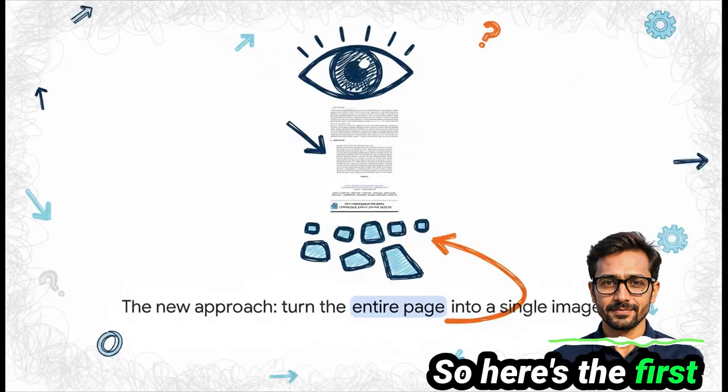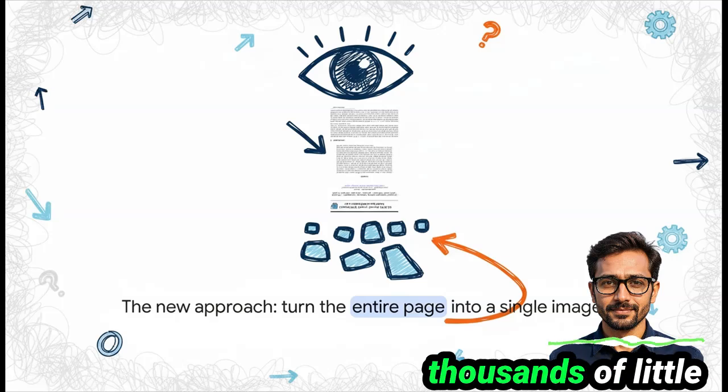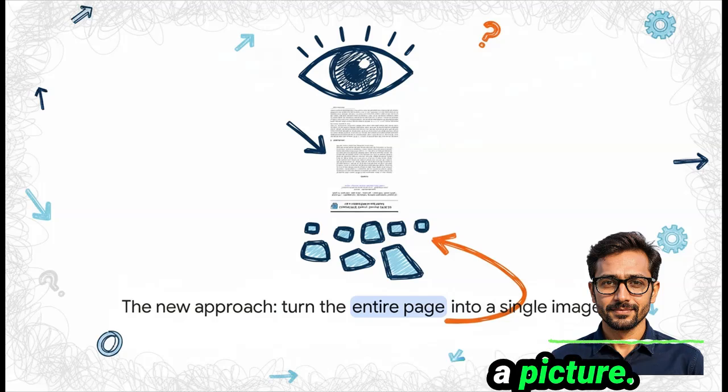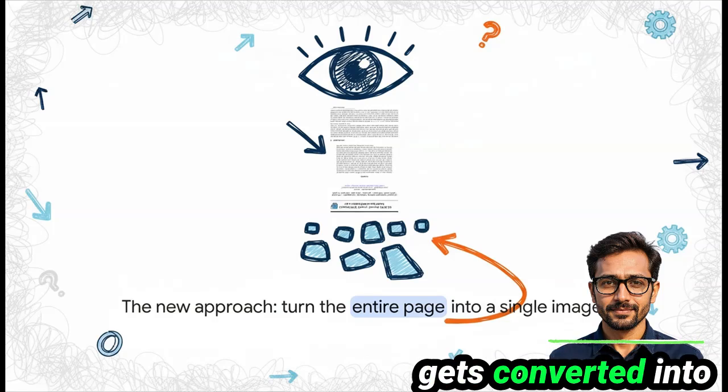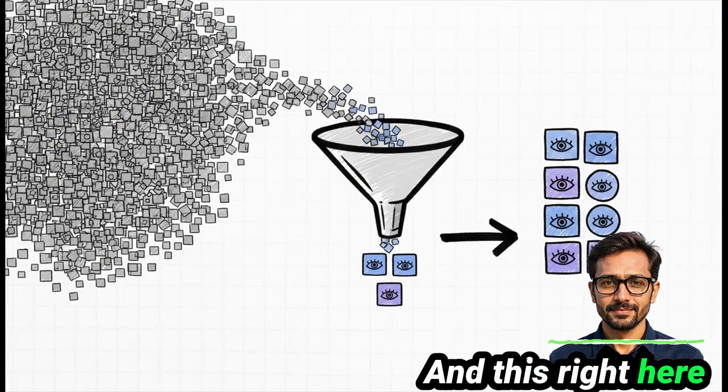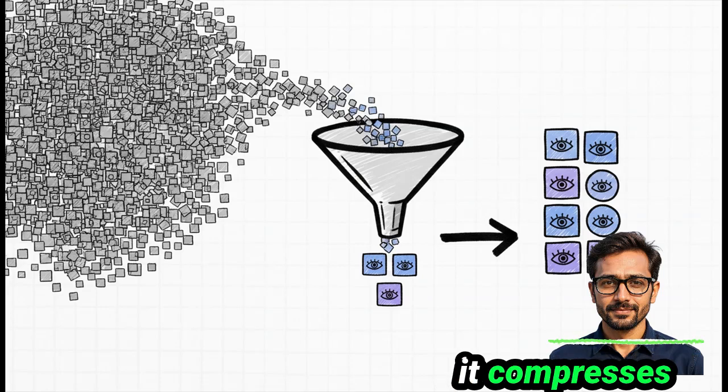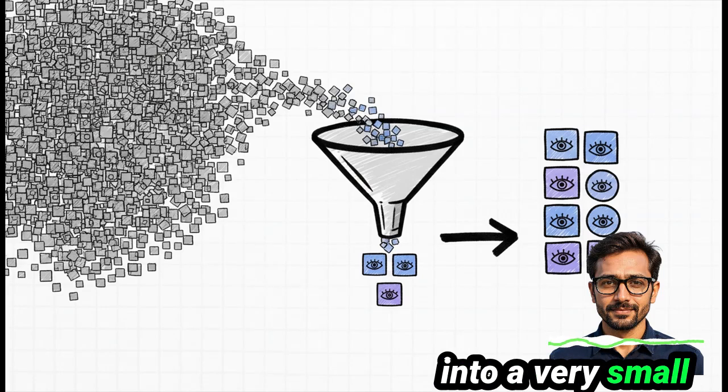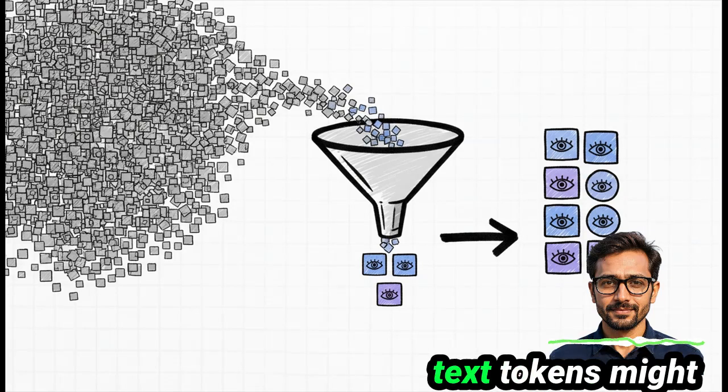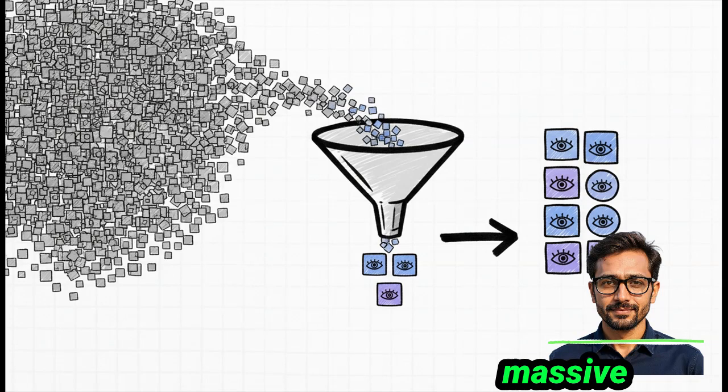So here's the first big move from DeepSeek OCR. Instead of feeding the AI all those thousands of little text tokens, it does something beautifully simple. It just takes a picture. The whole page gets converted into one single high-resolution image. And this right here is the magic trick. The AI takes that giant image and it compresses all of that visual information down into a very small number of what it calls visual tokens. So suddenly, a page that used to be a thousand text tokens might become just a hundred or so visual ones. That's a massive reduction in data.